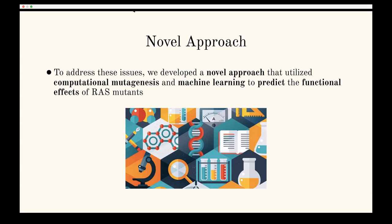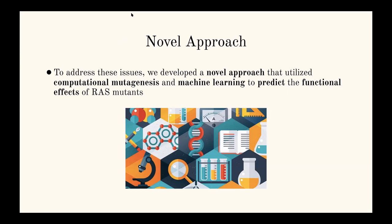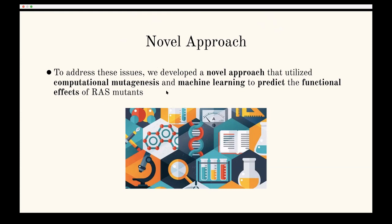We developed a novel approach that utilized computational mutagenesis and machine learning — the two key terms in the title of this application — to predict the functional effects of these mutations to the RAS protein. We've defined a lot of the basic terms before getting into the methodologies and results of the studies.